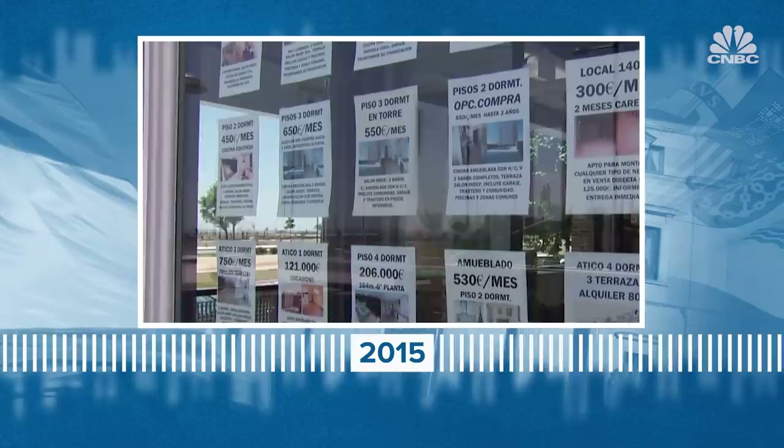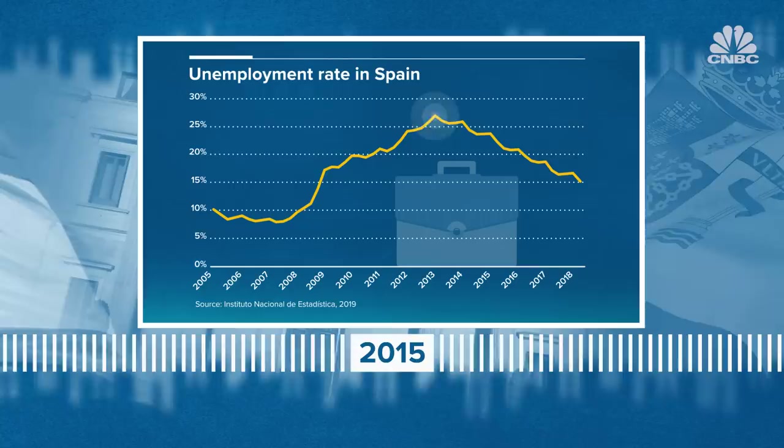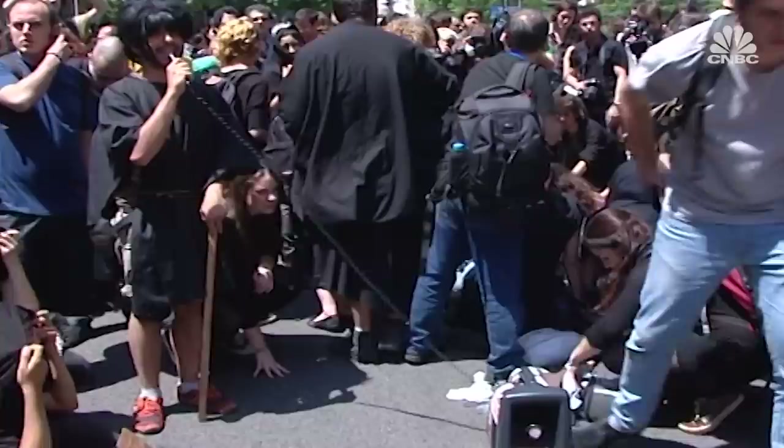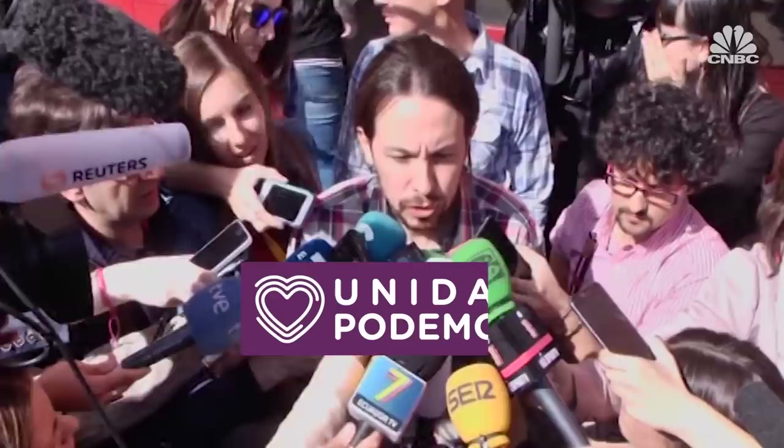By then Spain had suffered through years of austerity after the financial crisis of 2008. The unemployment rate had soared to nearly 27% in 2013, and by the time voters went to the polls in 2015, it was still hovering at around 21%. The challenging economic climate in Spain prompted widespread protests. These soon coalesced to form an anti-austerity, anti-establishment alliance known as Unidas Podemos, Spanish for Together We Can.